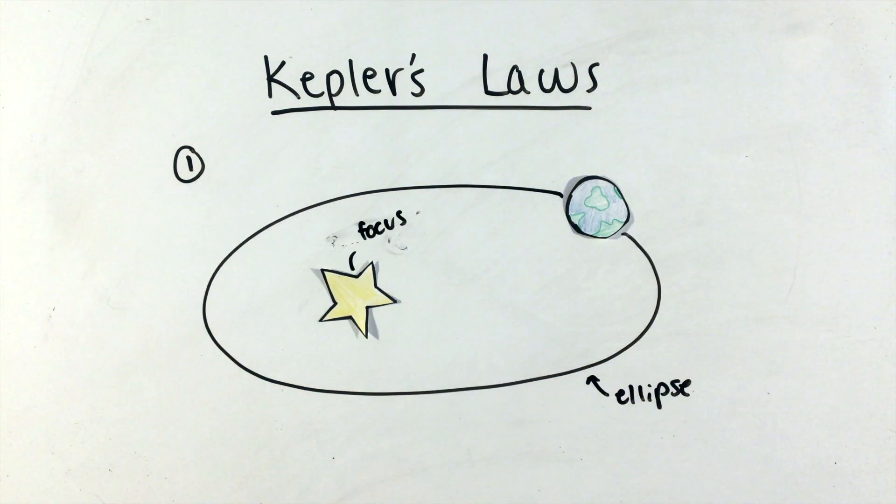For circular orbits, the central object will lie in the center, as the foci of a circle are both at the center.